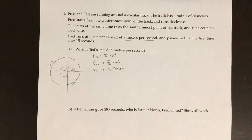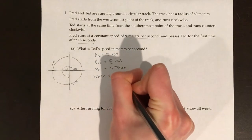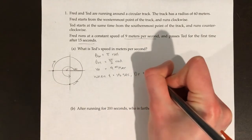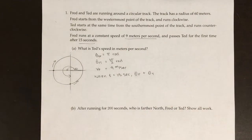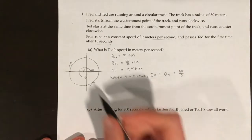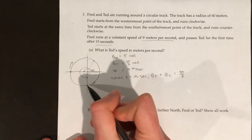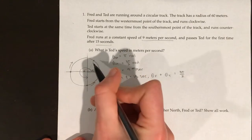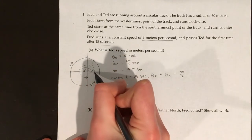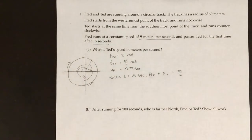That means when t equals 15 seconds, the distance that Fred traveled (theta of Fred) plus the distance that Ted traveled (theta of Ted) is equal to 3π/2. If we look at the picture, this person went this far from here to here, and this person went this far from here to here — that's when they're meeting at 15 seconds. So this distance plus this distance must equal 3π/2 radians, which is three-fourths of the circle.